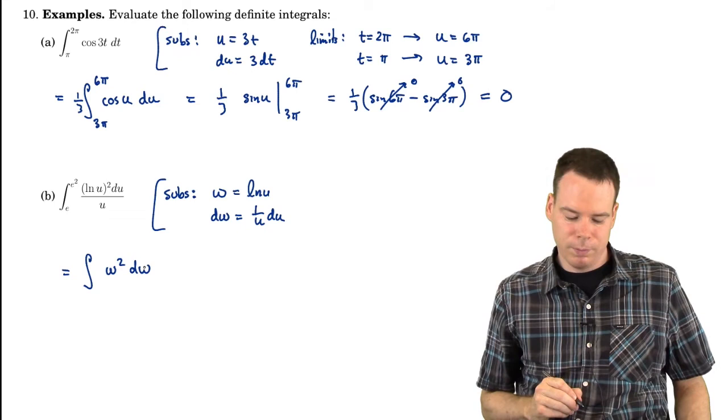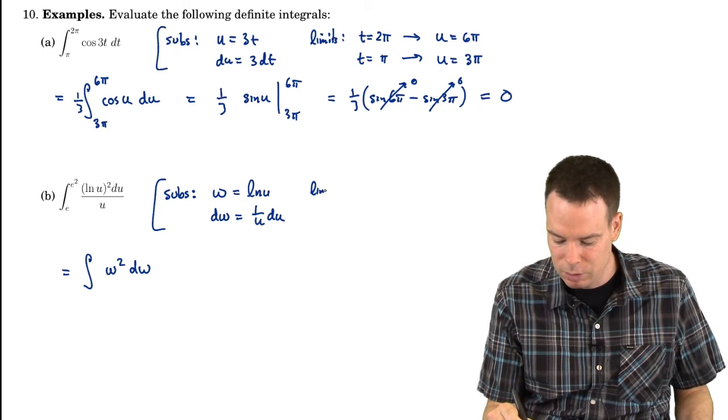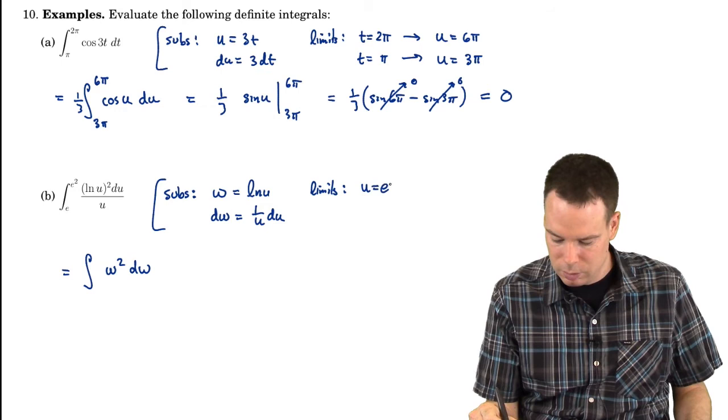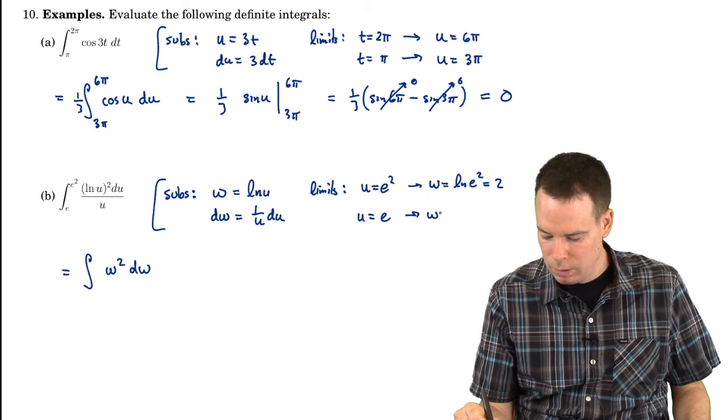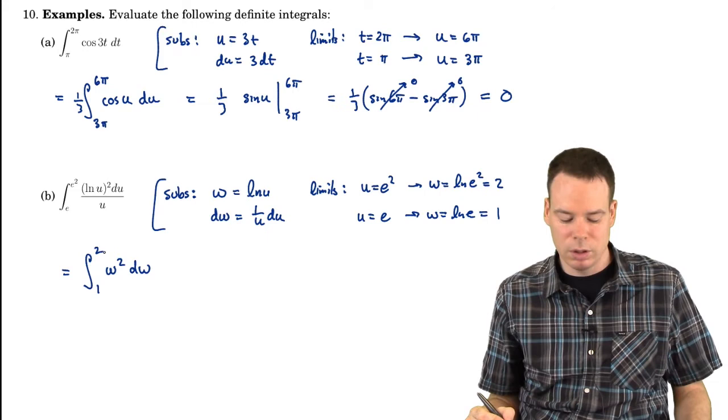So there's our integrand replaced in terms of u. Now we've got to work on the limits of integration. What are our limits? Well, our original limits were u is e and e squared. So what's w? w is ln of e squared or 2. And the other one is w is ln of e or 1. So our new limits of integration are 1 to 2.